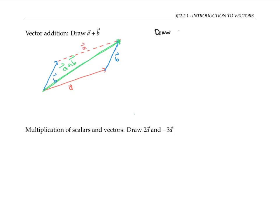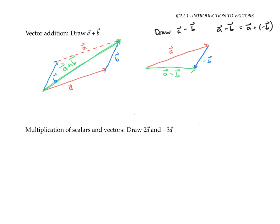Suppose we wanted to draw a minus b instead of a plus b. Well, a minus b is the same thing as a plus negative b, and we know that negative b is just b pointing in the opposite direction. So we line up a with negative b and connect the initial point of a with the terminal point of minus b to get the vector a minus b. Later, we'll see another way of defining a plus b and a minus b algebraically instead of geometrically.